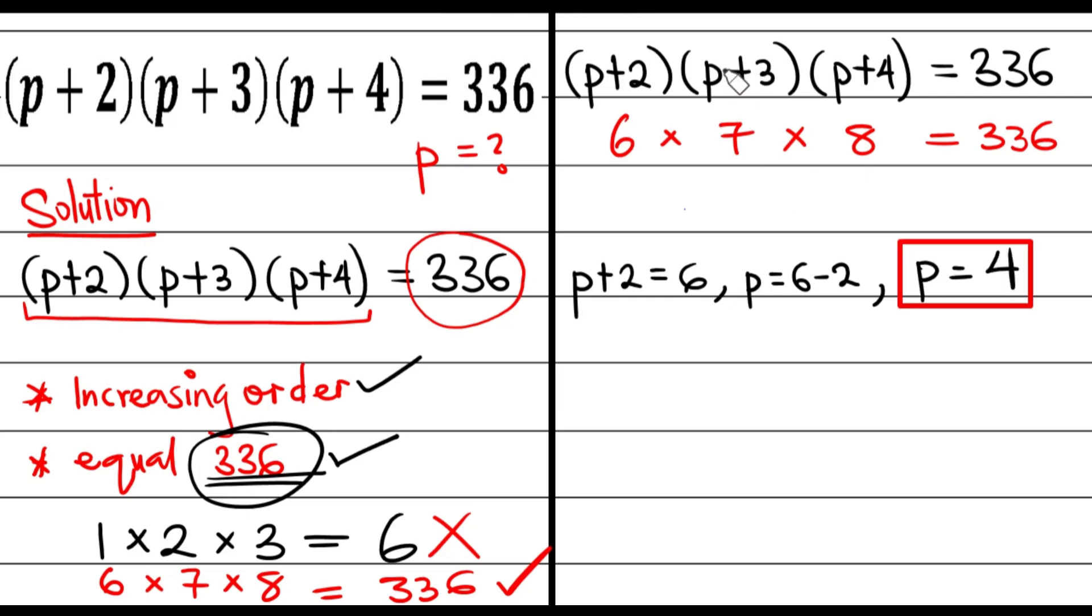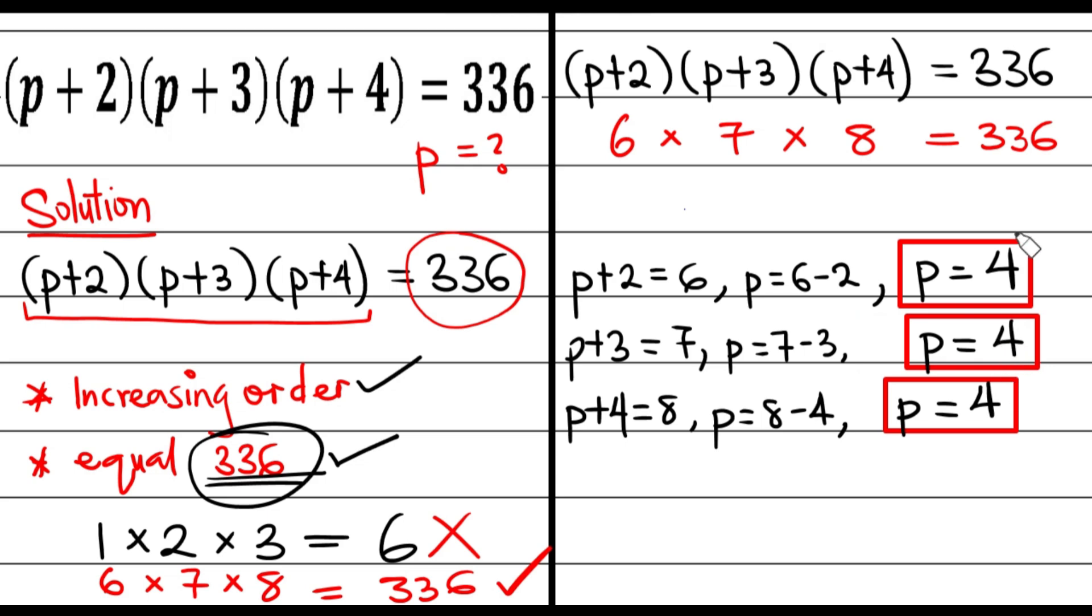Of course, I'm not going to stop there. I need to show this also. P plus 3 equals 7, then I say p equals 7 minus 3. At the end of the day, I stay showing that p equals 4. Of course, I'm not going to stop until I show for the third one. P plus 4 equals 8, then p equals 8 minus 4. At the end of the day, p equals same 4. Mind you, we get the same 4 all through because the same letter is used all through.